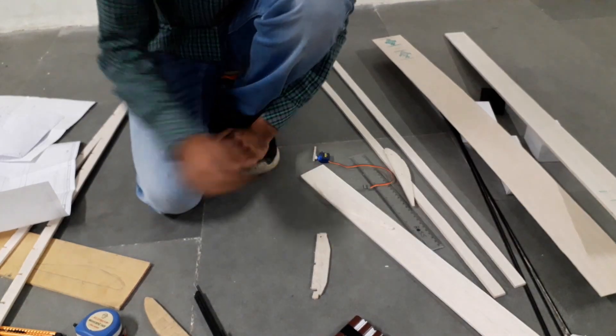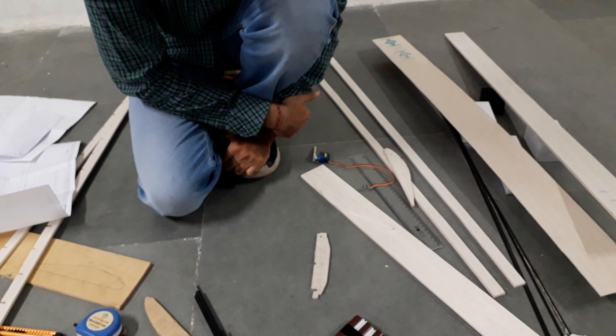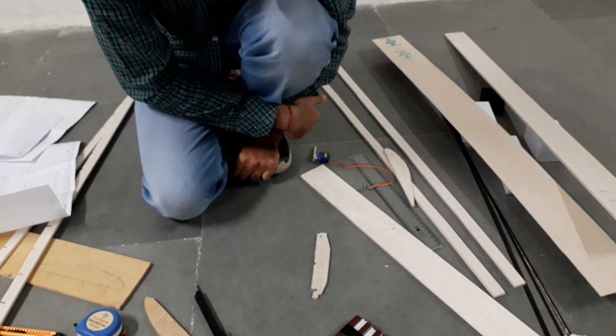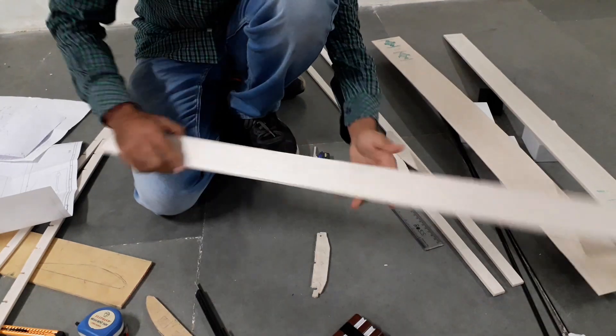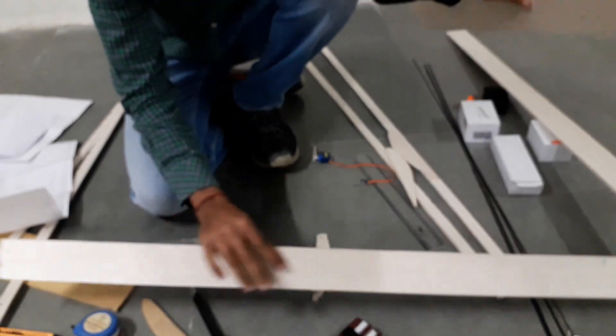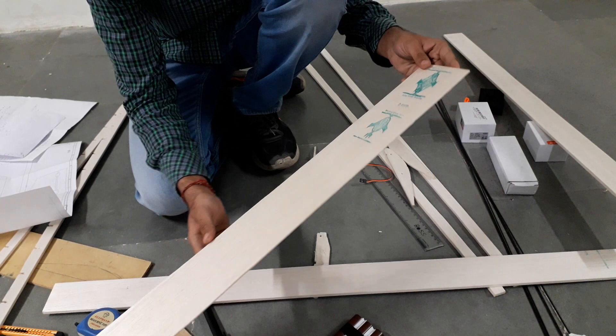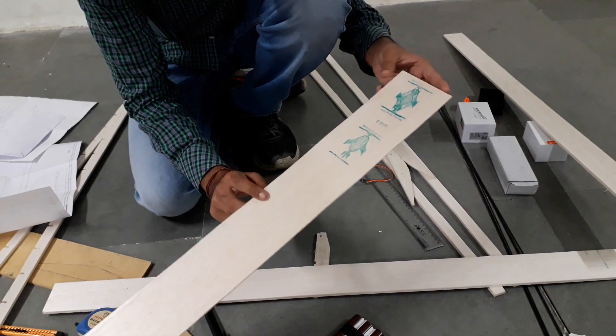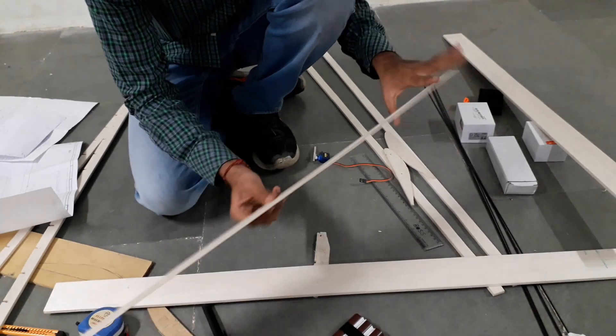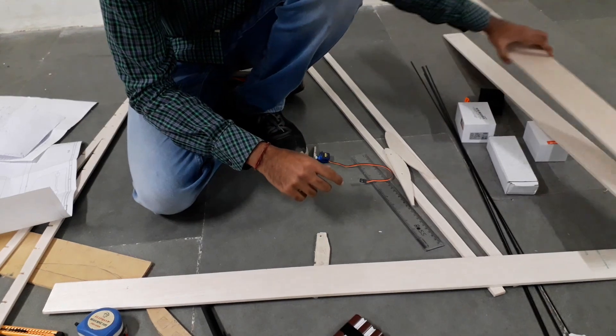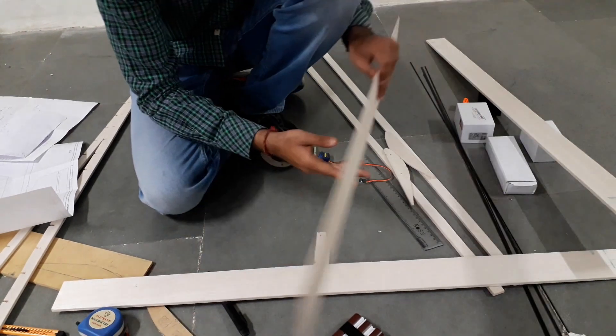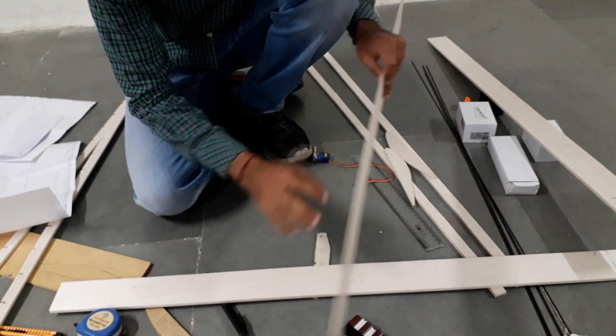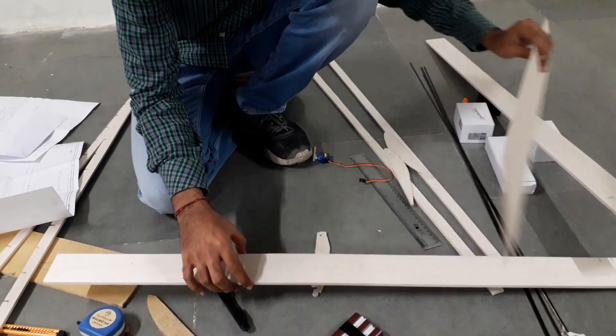Hello everyone, today I am showing you how I made my aerofoil shape from balsa wood. This is the balsa wood that I purchased from Sharma Modeling. I will share the link in the description below. This is 2mm balsa wood, thickness 2mm.